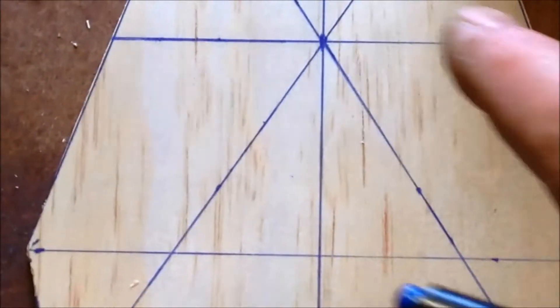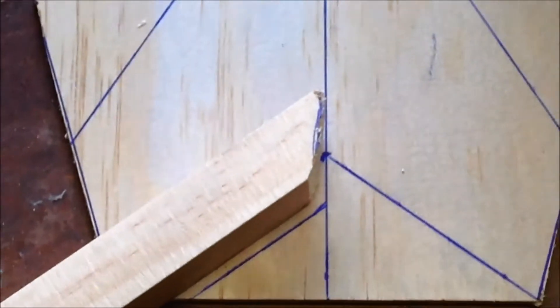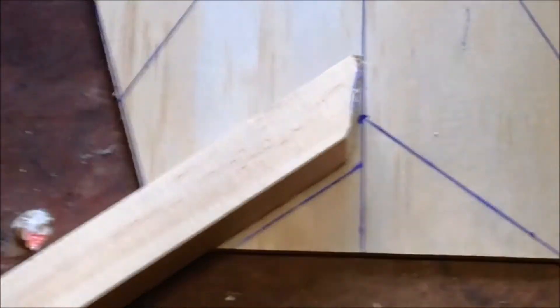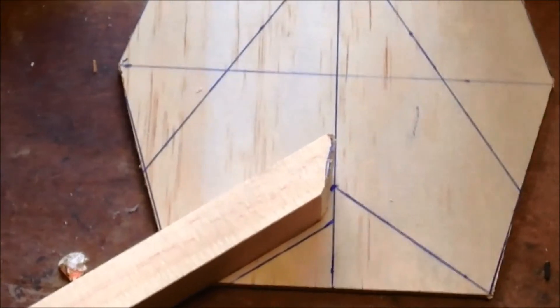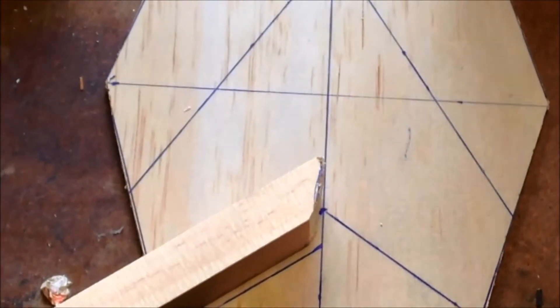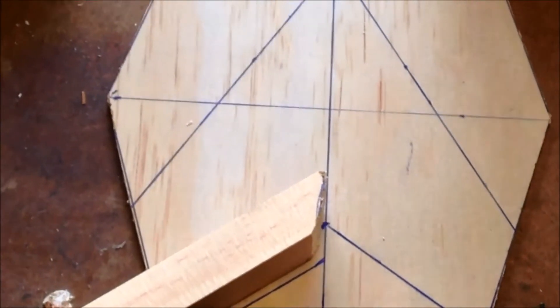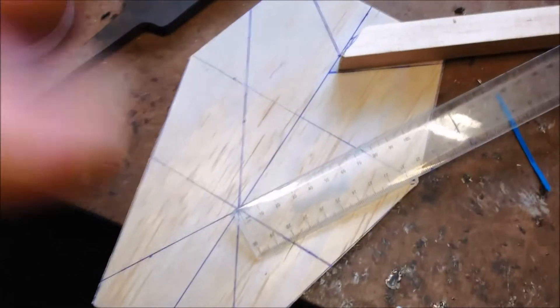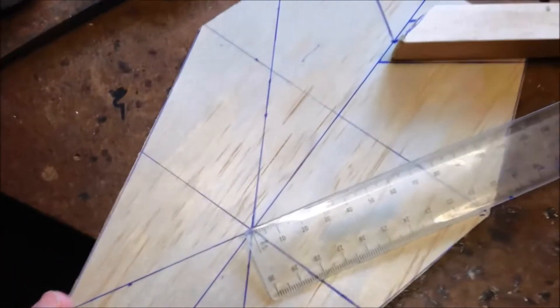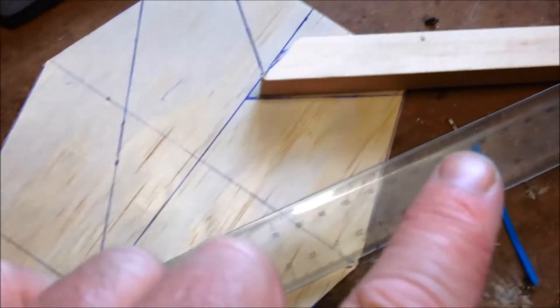I'm just going to use screws to start and when I'm happy that they're all in the right place I'll glue it all up. So there it is when you run out from the center along the 60 degree line 25 centimeters, middle of the arm, screwed in from the other side.